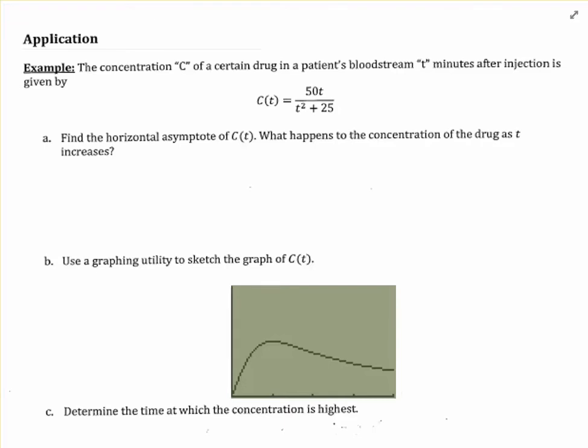In this video, we're going to be using some of our results regarding rational functions in order to answer some questions related to this rational function, which is meant to model the level of concentration in the patient's bloodstream T minutes after injection. If you look at the function here, it's C(t) equals 50t over t squared plus 25, and that is definitely a classic-looking rational function.